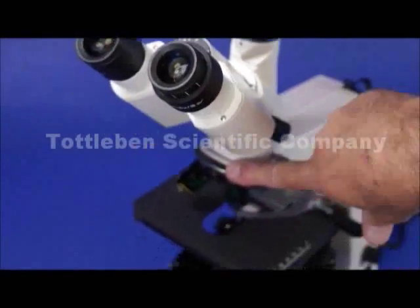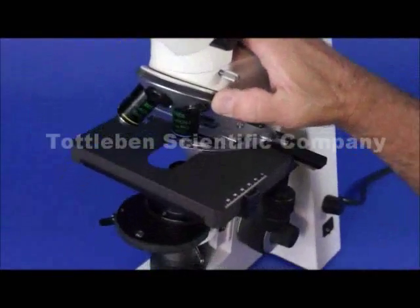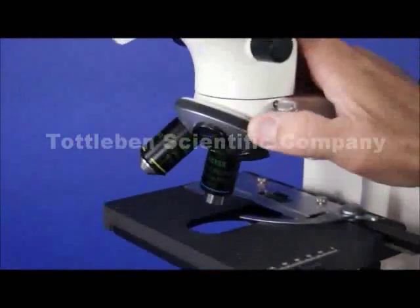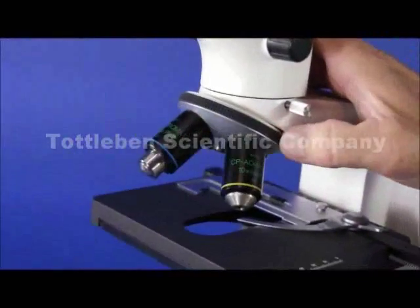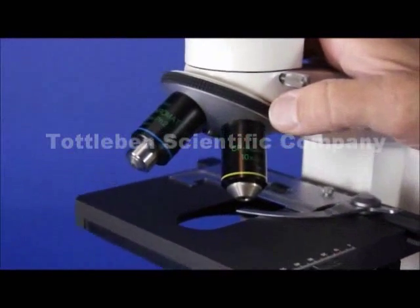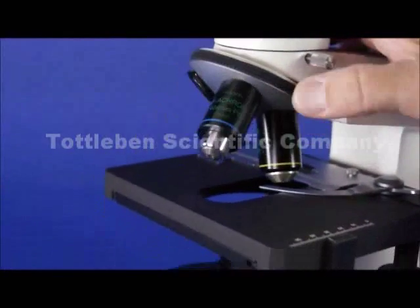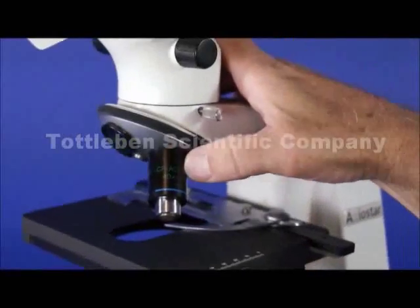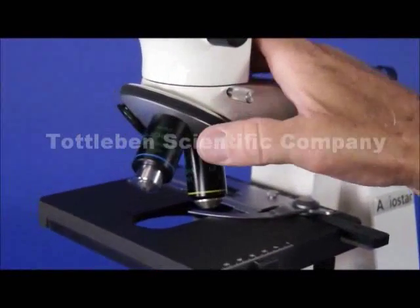Moving down the microscope to the nose piece. It's a four place nose piece. There are two phase contrast objectives on it. A 10X CP Acromat which is phase one and a 40X CP Acromat which is a phase two.